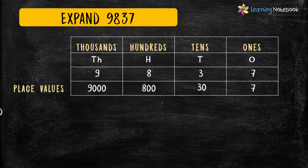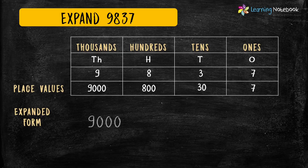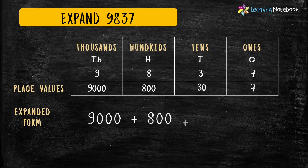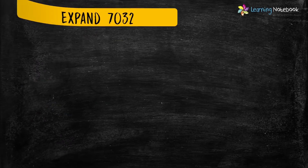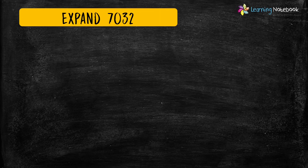Now we know the place values of all the digits of this number, so let's write the expanded form: 9000 plus 800 plus 30 plus 7. Let's see the next question.